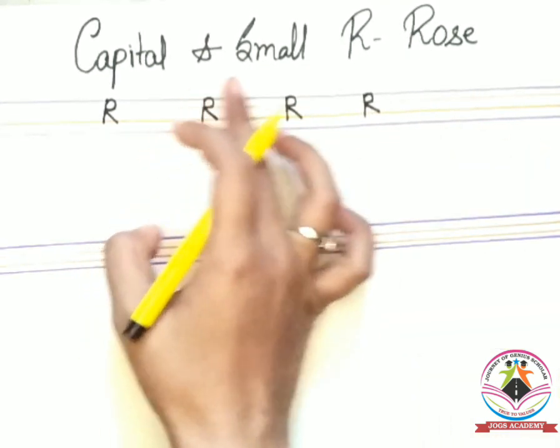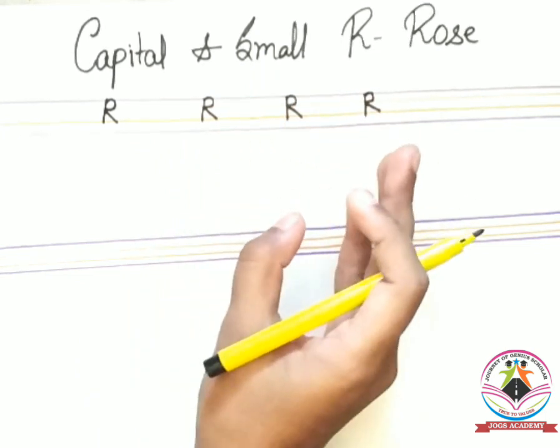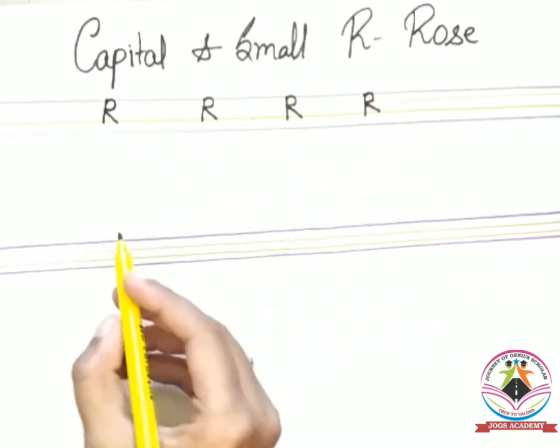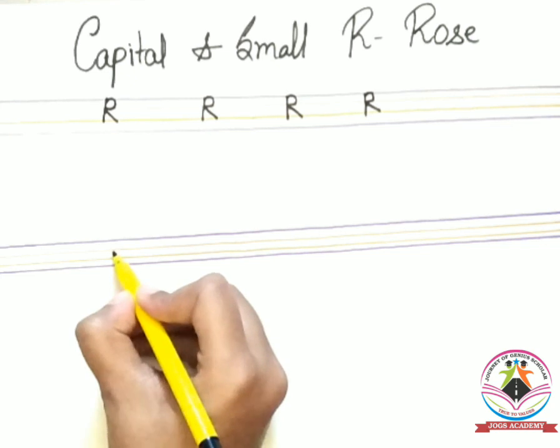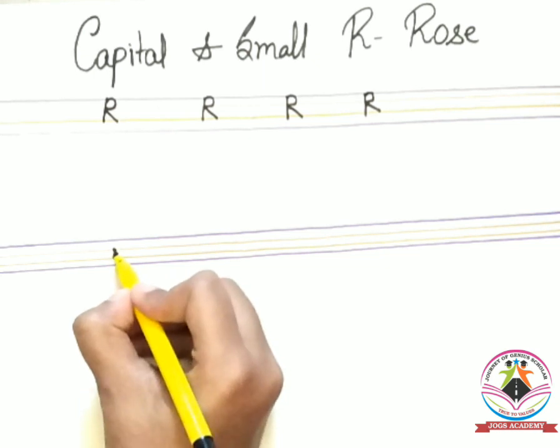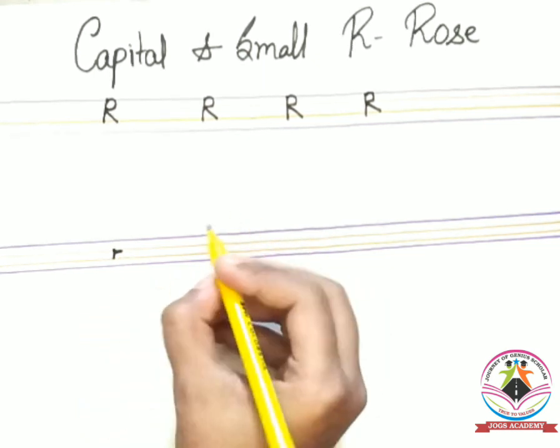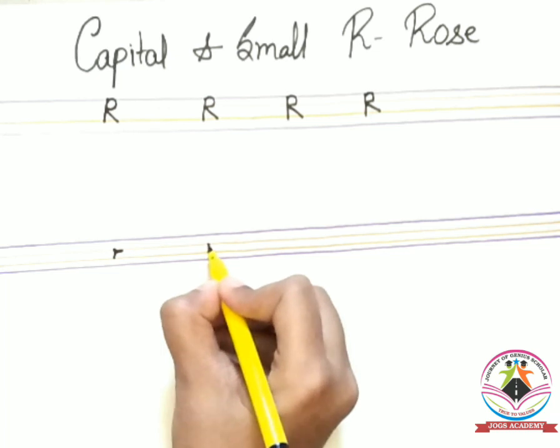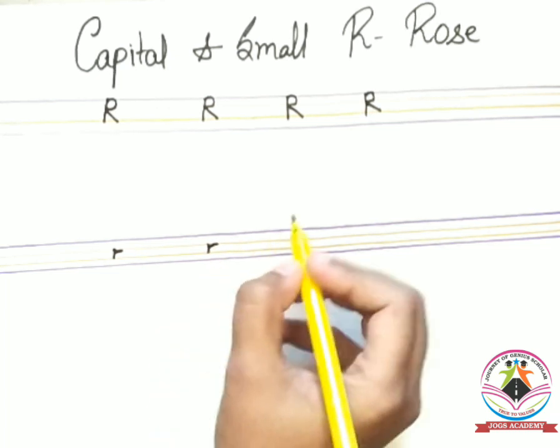Now we will draw how to write small R. R for red. So firstly we will draw a standing line between the base line and waist line and a sleeping line like this. Again standing line and now sleeping line like this.